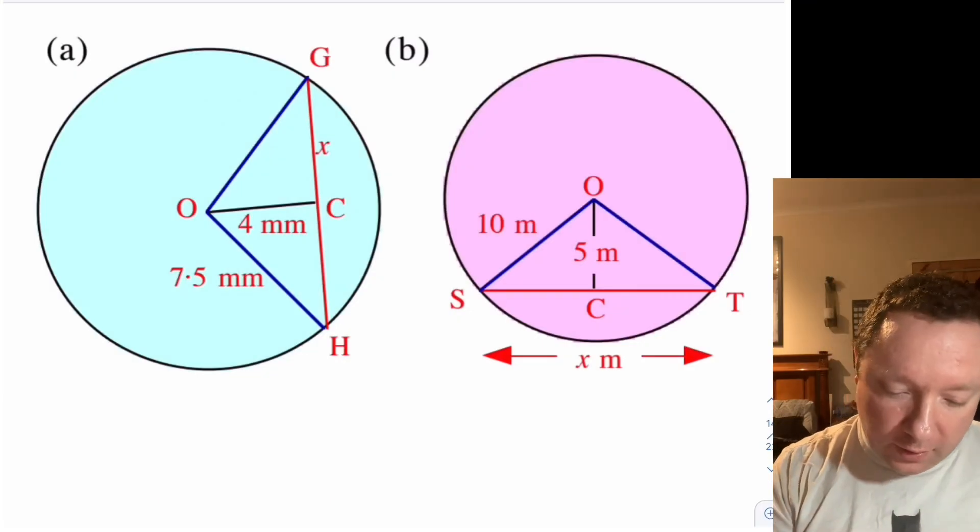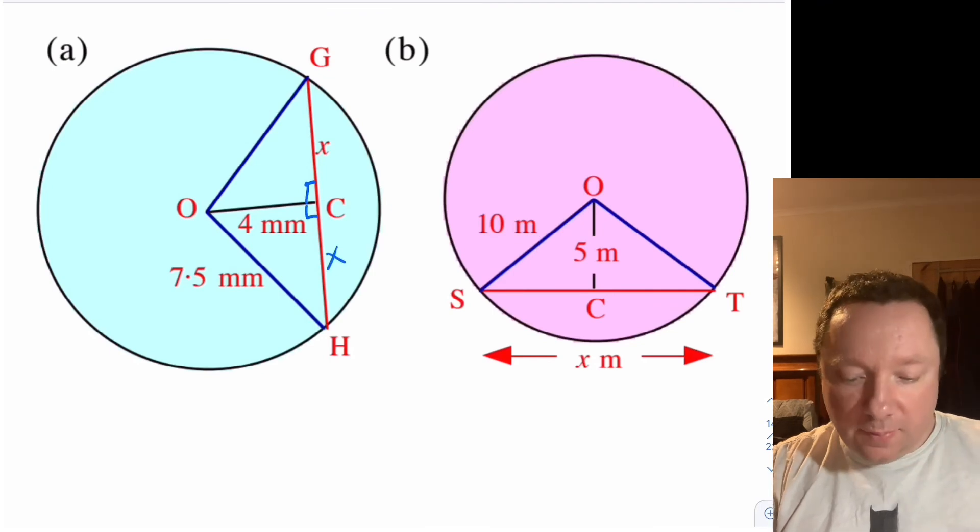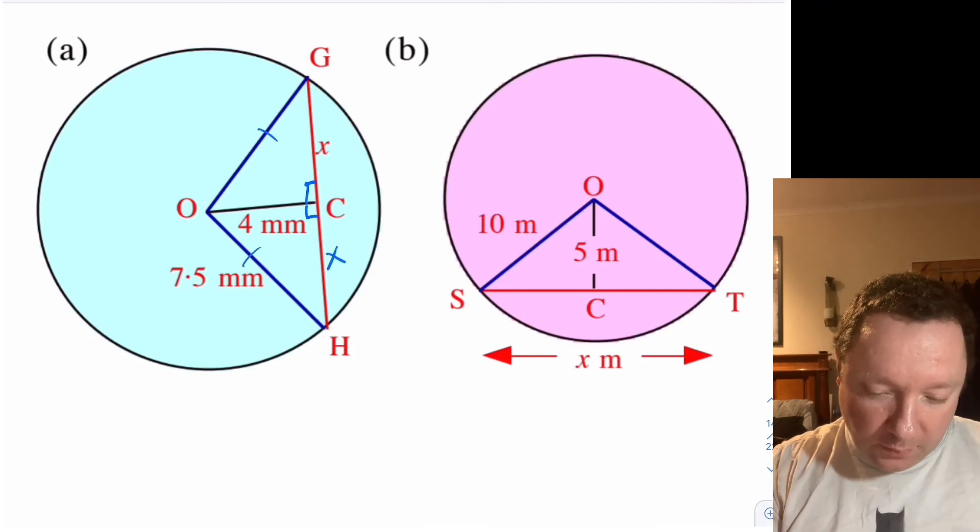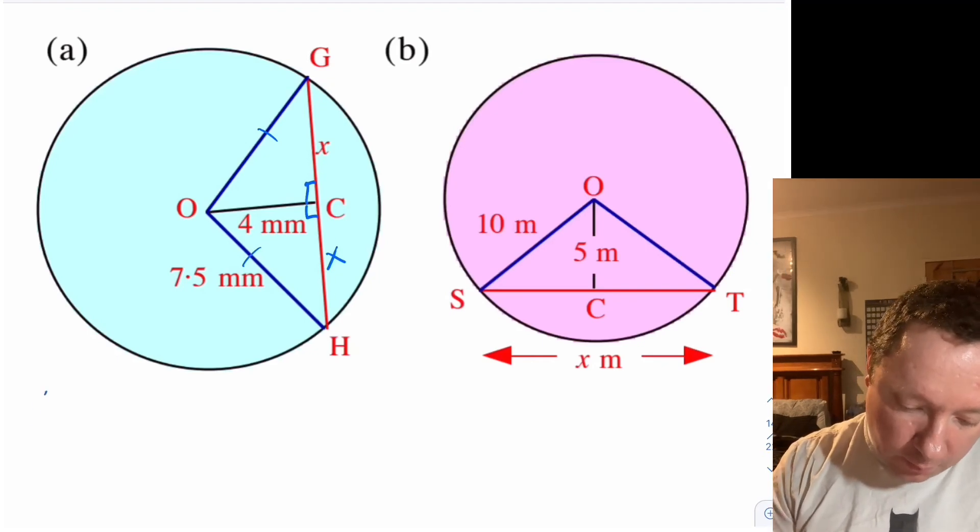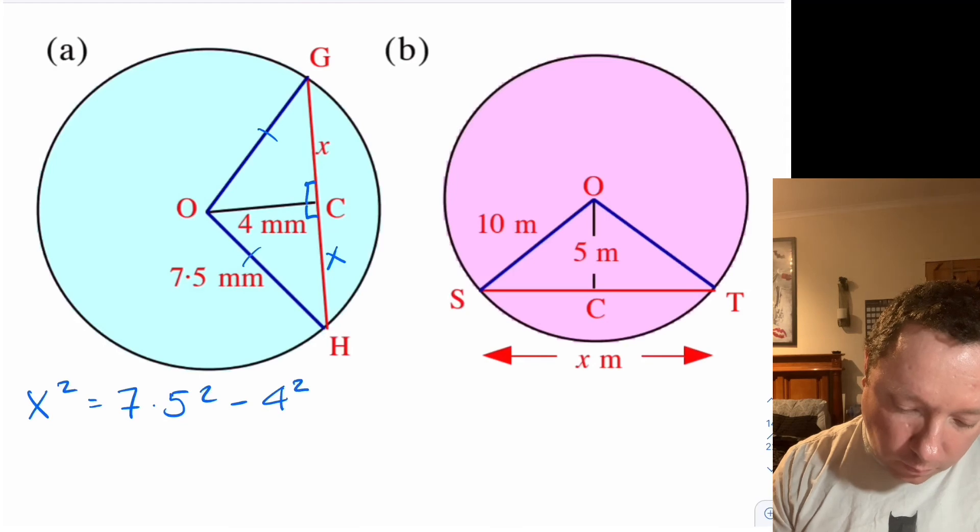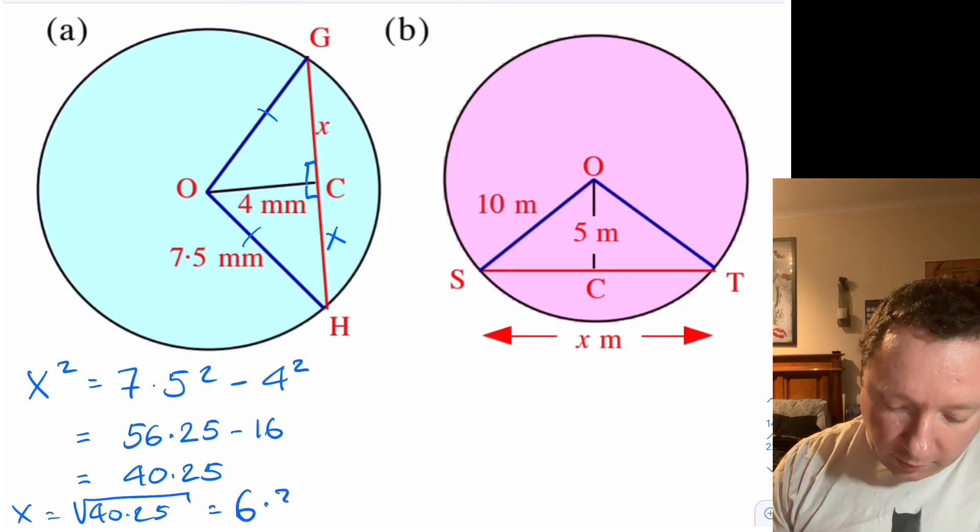Okay so the answers. Let's go through this. So we know that this is going to be a right angle down here. We know that this is also going to be X because of symmetry, because that's a radius and they're both the same size. So we could use Pythagoras. So simply X squared you should have written is 7.5 squared minus 4 squared, which is 56.25 minus 16, which is 40.25, which is the square root of that, 6.34 centimetres.